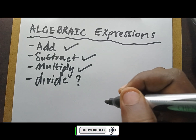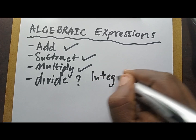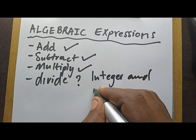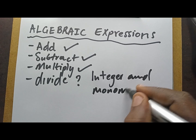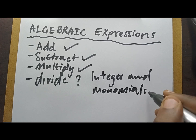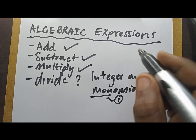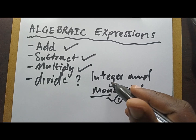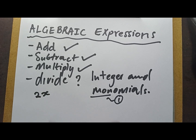Remember, you must know how to divide integers. You must know how to divide integers and monomial by monomial. Remember, monomial means — mono means one — which means one term. We are working with terms. You'll be given an expression divided by an integer or divided by a monomial.